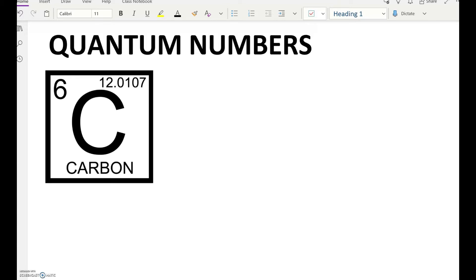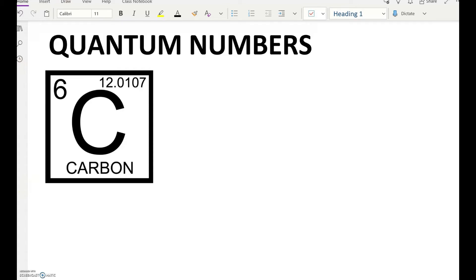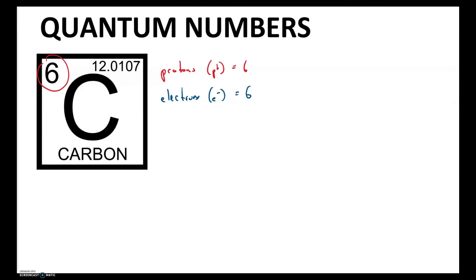Consider our old friend carbon. We know according to the atomic number that carbon has six protons, which we'll abbreviate as P+. We also know that if it is a neutral atom — one with no charge — it has to have the same number of electrons, also six, abbreviated E-. The number of electrons changes as you go through the table, and you'll notice they go in order.